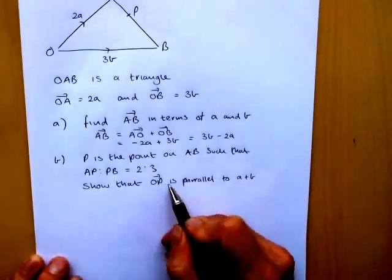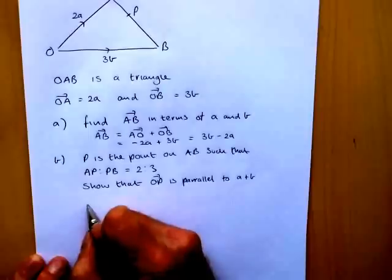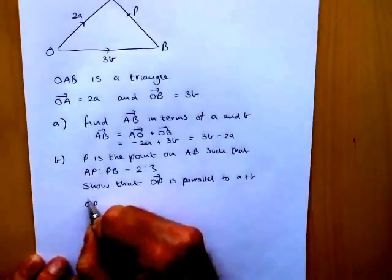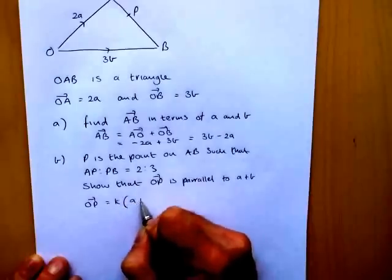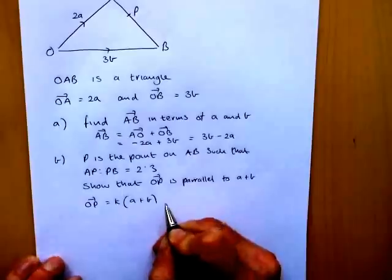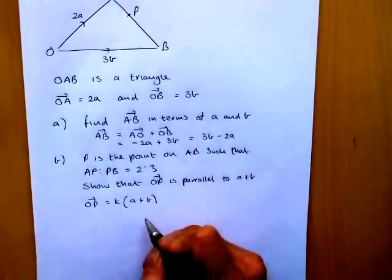So I'll remind you that if you're showing that one vector is parallel to another, what you've basically got to show here is that OP is some multiple, so we say K, of A plus B.